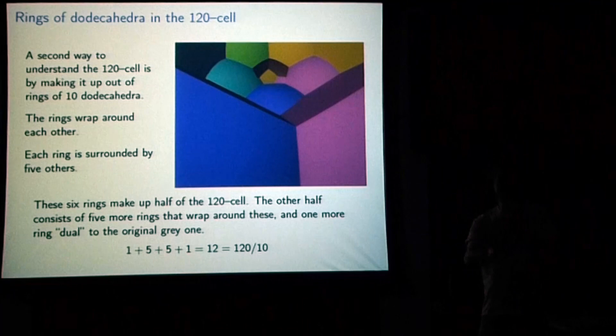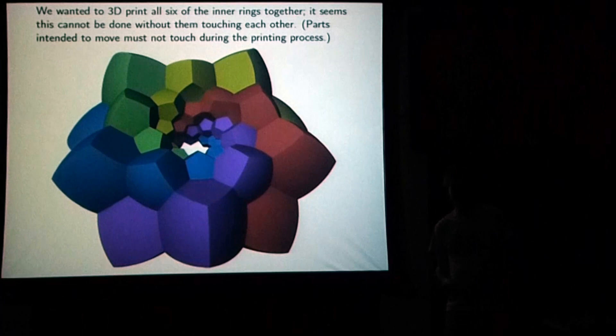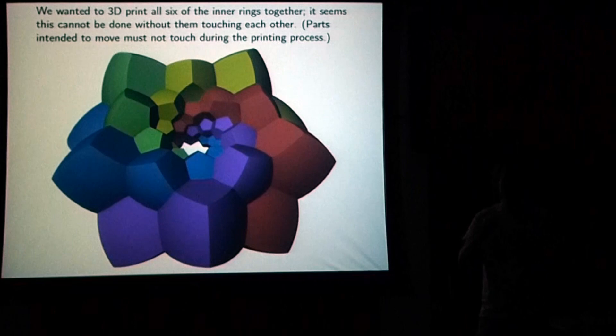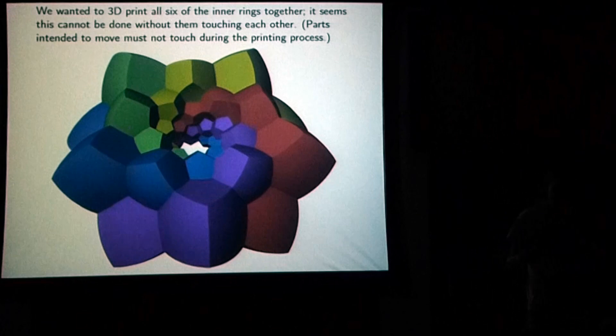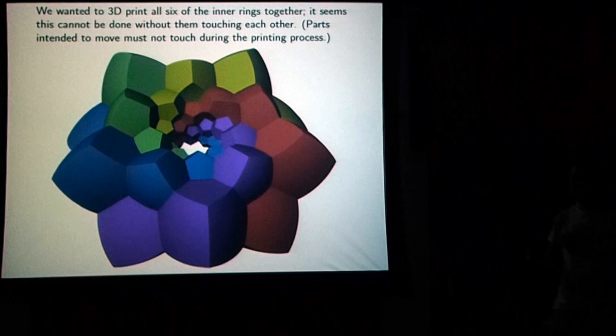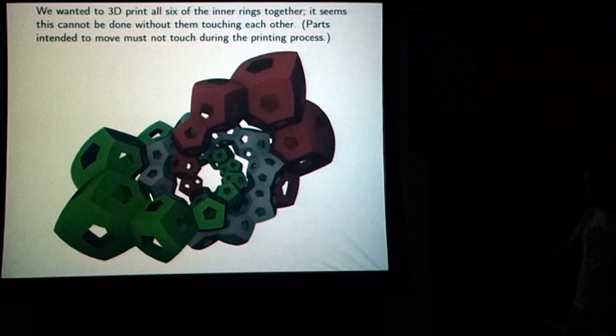Saul and I wanted to 3D print this thing. We wanted to print that central gray ring together with the five that are around it, but we wanted them to be loose — to be able to see how they fit together. There's a problem with 3D printing: you can't have pieces that are intersecting or touching each other in the printer, because they'll come out fused together. We could only figure out how to arrange two of the outer rings around the central one so that they were loose.